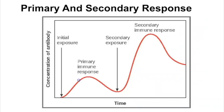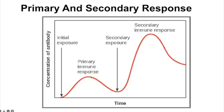This rapid secondary response is what it means to be immune — memory B cells allow destruction of the pathogen before symptoms occur. This is an example of active immunity. The primary response is when you are first exposed to a new antigen: it takes longer because the correct B cell must be found among 10 million, and fewer antibodies are produced. The secondary response is much faster and produces many more antibodies because memory B cells already exist.